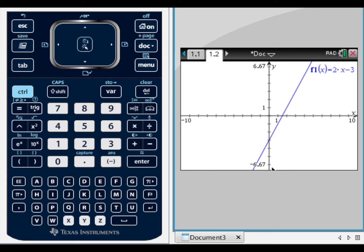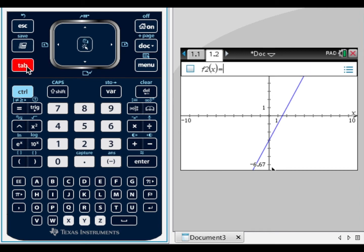To enter the second graph, hit tab to display the graph entry bar, minus, control divide to access the fraction template, 1 over 2, right arrow, x, minus 1, and enter.